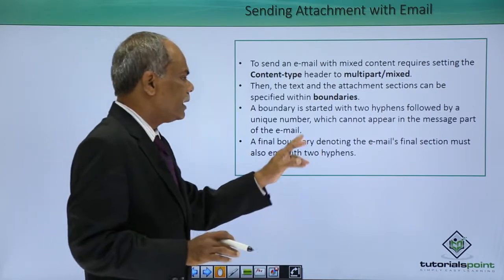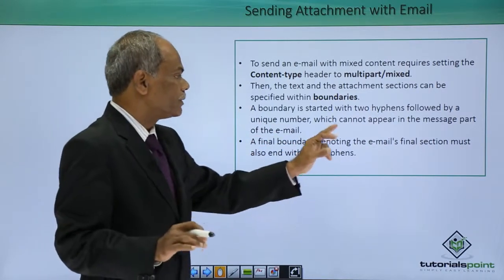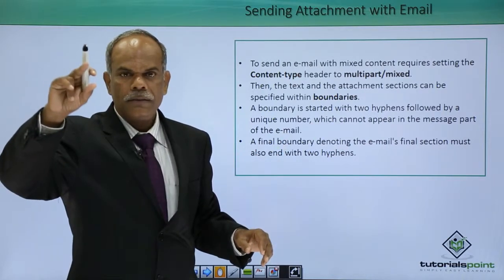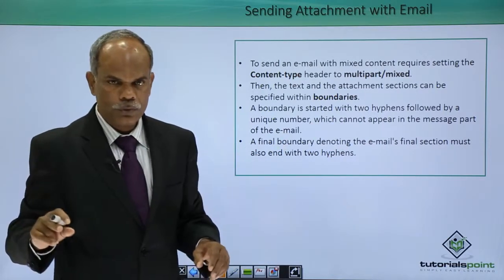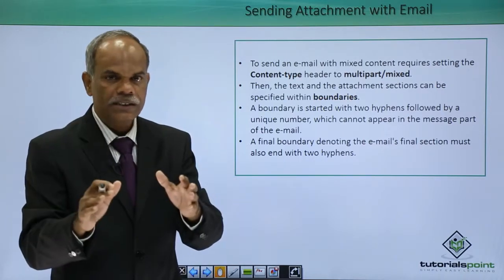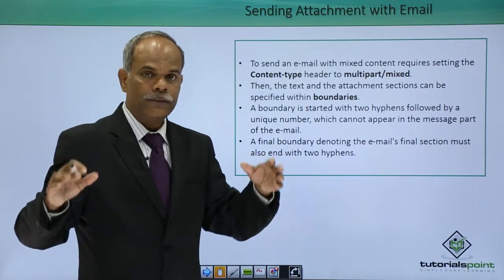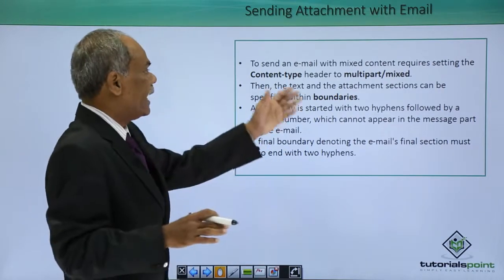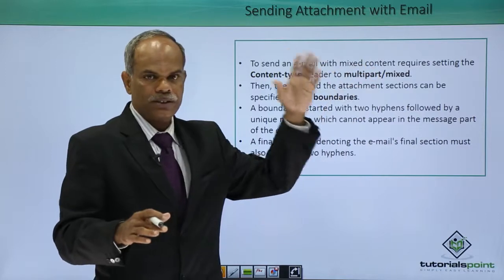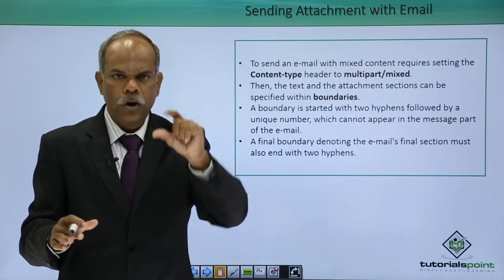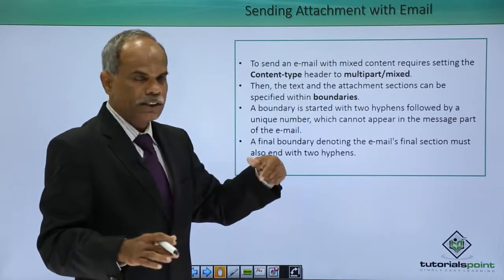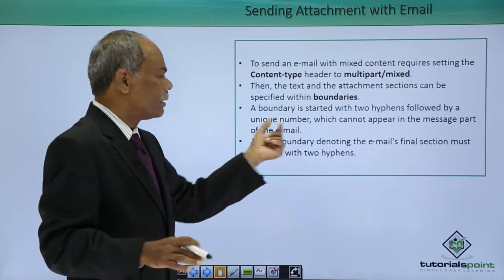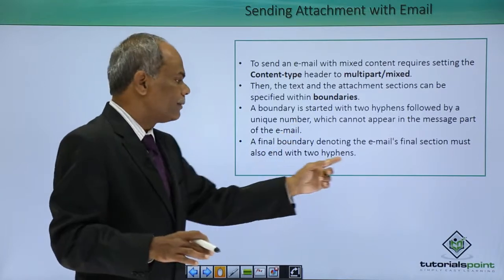The final boundary denoting the email's final section must end with two hyphens — the two hyphens begin the boundary and end it with two hyphens. The rest of the things are the same; the sendmail function is to be executed, only the message is to be encoded as multipart/mixed, and to form the message, use the boundaries with the double hyphens and a particular unique string, and end it with two hyphens.